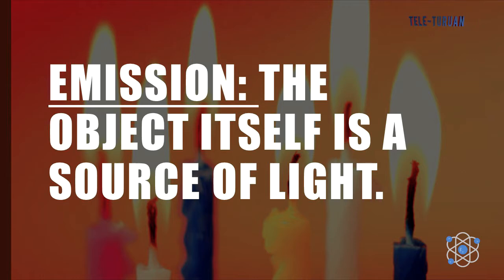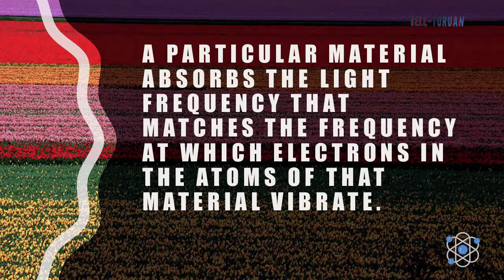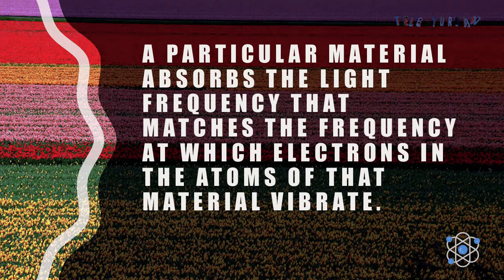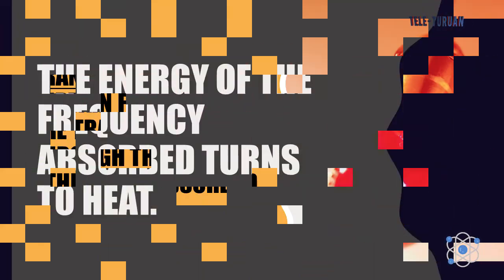Emission is when the object itself is a source of light. Reflection: certain frequencies are reflected from the object while others are absorbed. A particular material absorbs the light frequency that matches the frequency at which electrons in the atoms of that material vibrate. The energy of the frequency absorbed turns to heat.